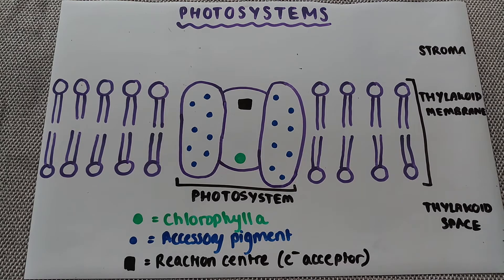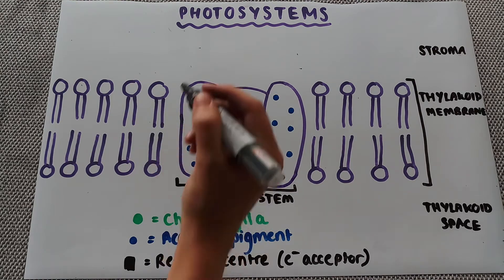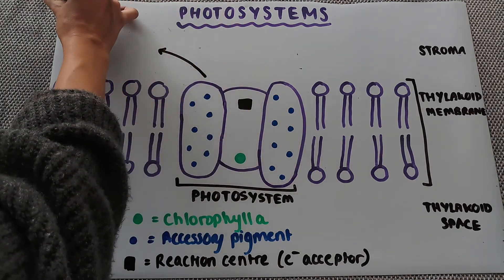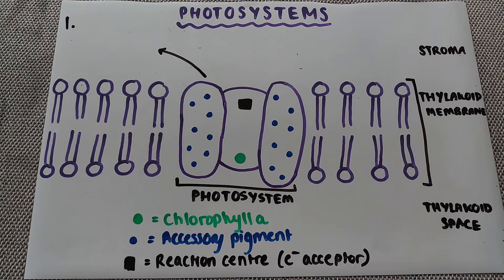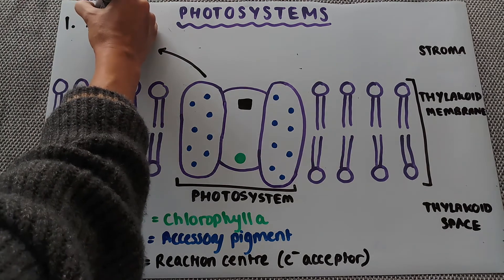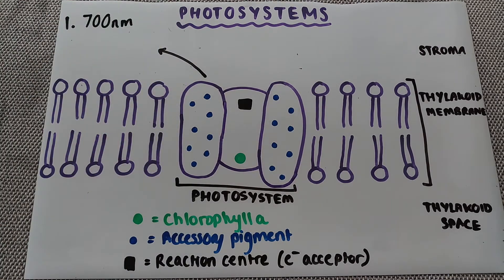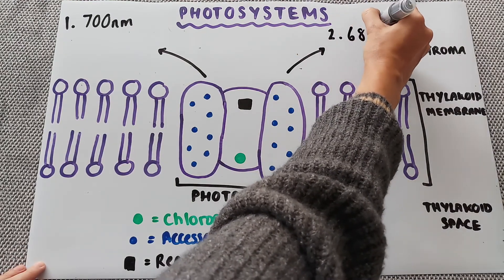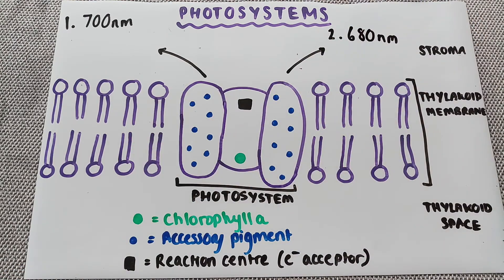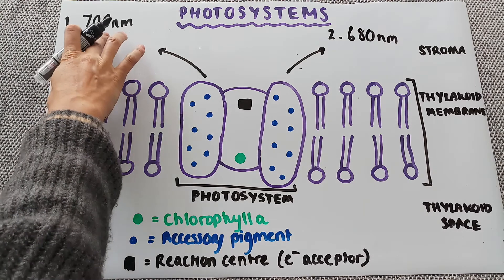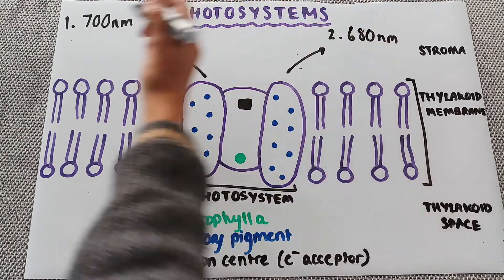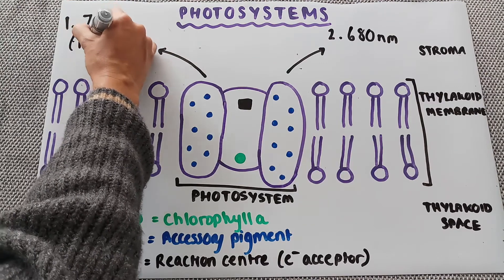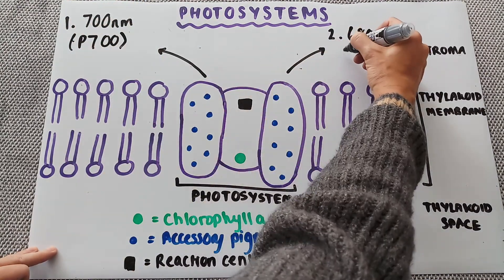There are two different types of photosystems used in the light dependent reactions. Firstly, photosystem one works best at the light wavelength of 700 nanometers. We also have photosystem two which works best at 680 nanometers. Both absorb light more efficiently at slightly different wavelengths. Sometimes photosystem one is referred to as P700, and photosystem two as P680.